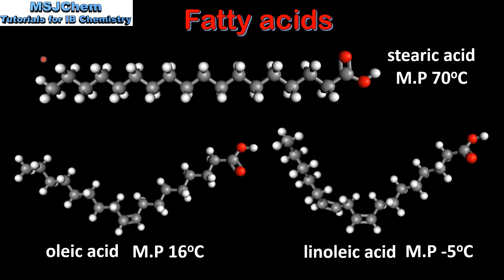Next we will compare the melting points of the 3 fatty acids. At the top we have stearic acid, which is a saturated fatty acid — its melting point is 70 degrees C. Bottom left we have oleic acid, which is a monounsaturated fatty acid with 1 carbon to carbon double bond.